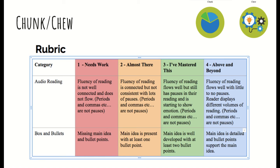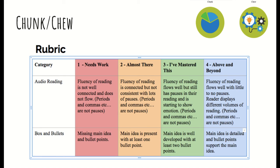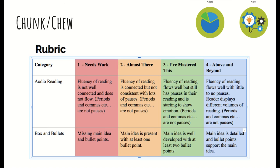And for your second part — the second agenda — your boxes and your bullets. If you are missing the main idea and bullet points, you will get a one. If your main idea is at least present and at least one bullet point, you'll maybe get a two. Number three: the main idea is developed with at least two bullet points — it doesn't have to be masterful, but it should be precise. Lastly, a four: the main idea is detailed and bullet points support the main idea. Your main idea is well put together, well thought out, and the bullet points reflect the main idea.